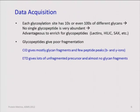Glycopeptide identification is notoriously difficult. One reason is that each glycosylation site has tens or even hundreds of different glycans on it, so the signal from a peptide carrying a glycosylation site is split between many species, and none of them are very abundant. So you're looking at small, low-abundance precursors.